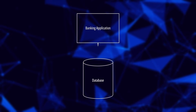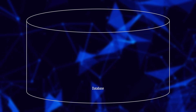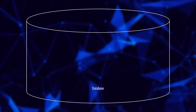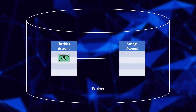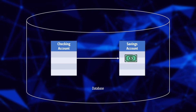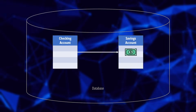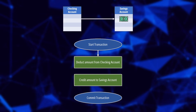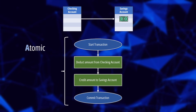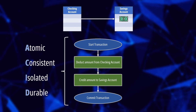In traditional monolithic applications, transactions are managed by a single database ensuring the ACID properties. An example of a transaction is the transfer of money between a checking account and a savings account. In its most simplified form, we need to perform two operations: deduct the amount from the checking account, and credit the amount to the savings account.